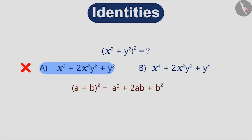So according to this identity we write the answer as x² + 2x²y² + y², but notice that here a should be x², not x. Similarly b should be y², not y.